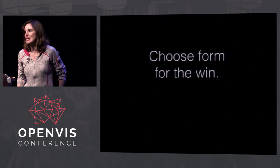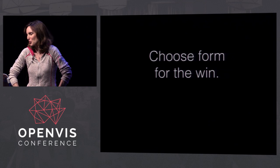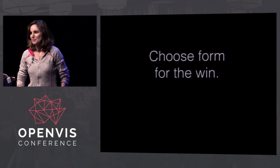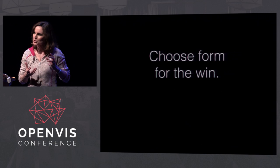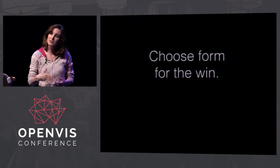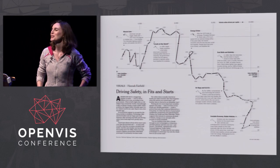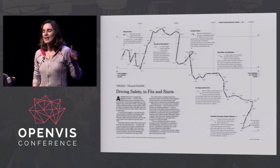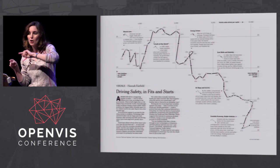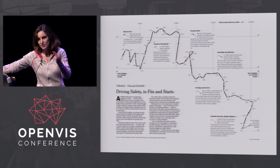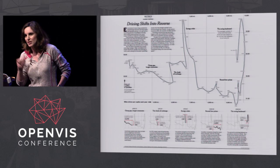Choosing form — form for the win. Getting to play with form is one of the great joys of being a visual journalist. Finding the right form to match your data is kind of the most magnificent thing in the world, and also sometimes the hardest. This is a connected scatter plot — the actual father of a piece you've already seen three times. Incidentally, the data for this piece also came from that FARS data set.